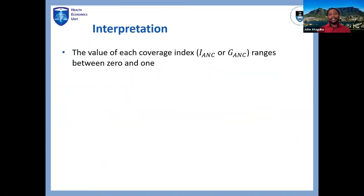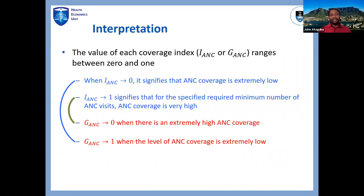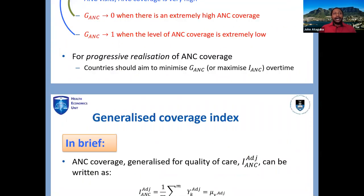To interpret the index: the summation of the two indices is one. If you reduce the gap, you increase coverage; if coverage is dropping, the gap is increasing. Each index ranges from zero to one. When the coverage index equals zero, the gap is one — there is no coverage at all. When the index equals one, the gap is zero — there is no gap to be filled. That is where we want countries to go. For progressive realization, we want to minimize the gaps and move countries towards an index of one.